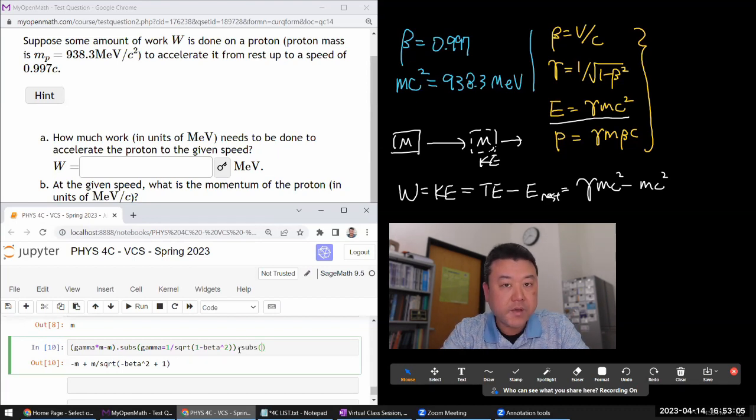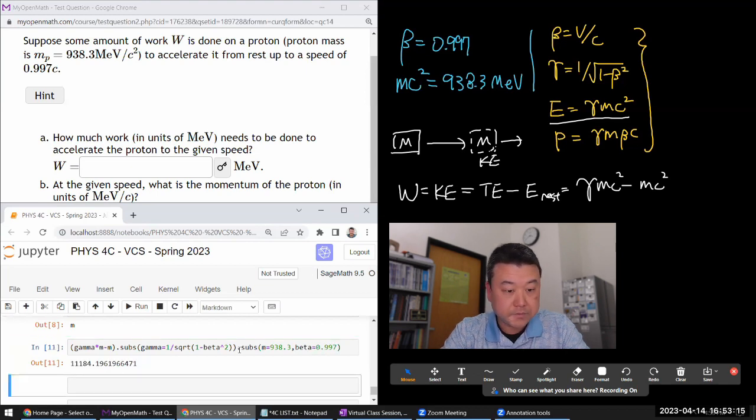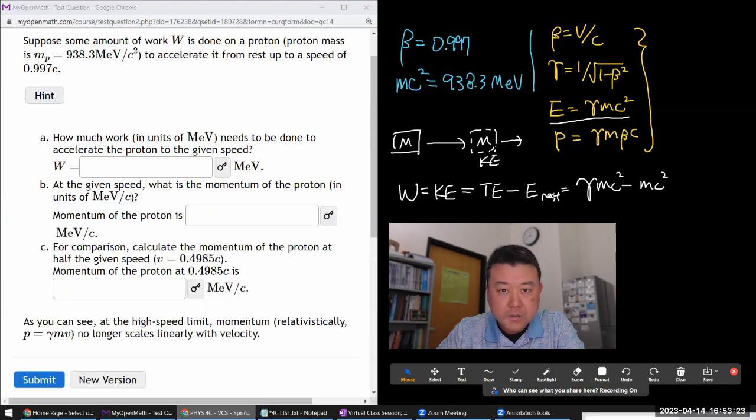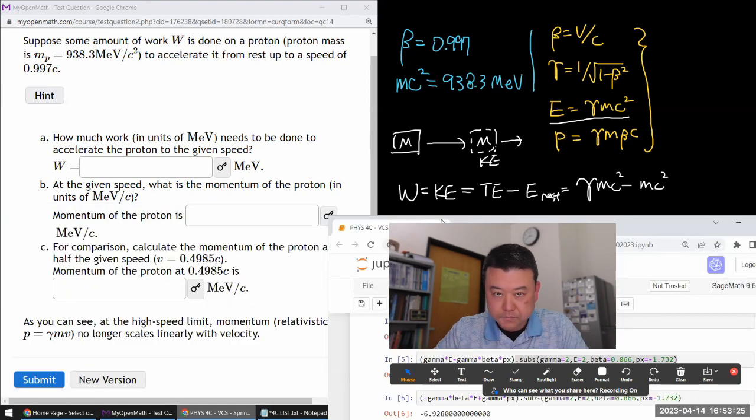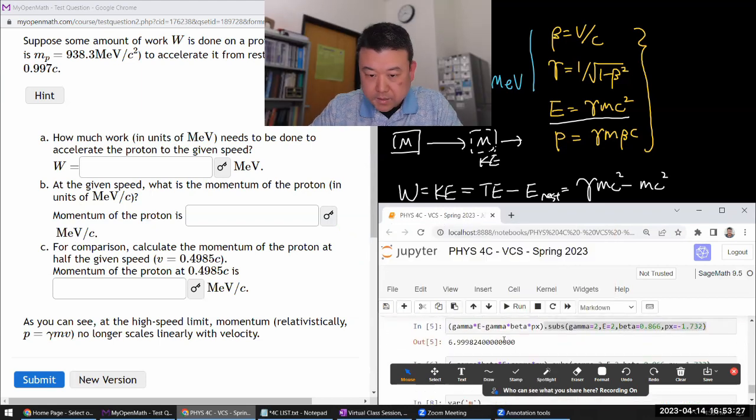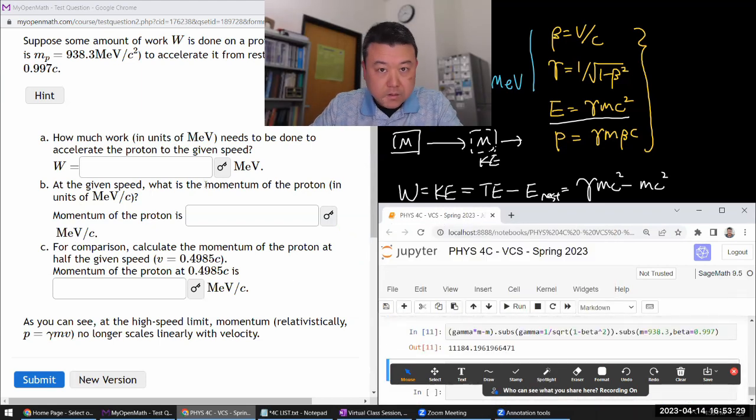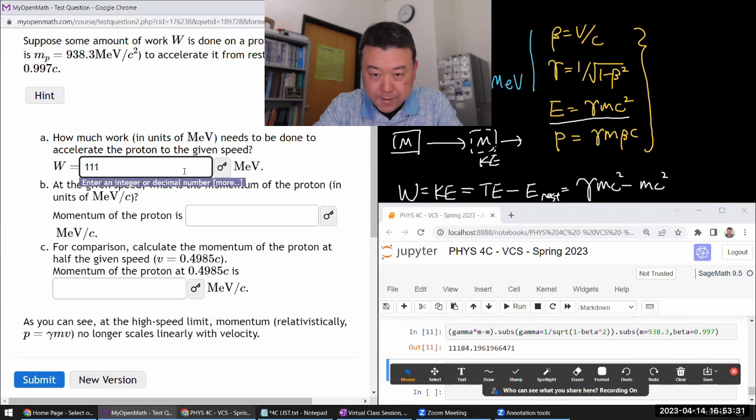Once I have that, then I can substitute in my rest energy, 938.3 MeV, and my beta, which was given, 0.997. So with that, it says, yeah, I guess that is right. That is a super high.